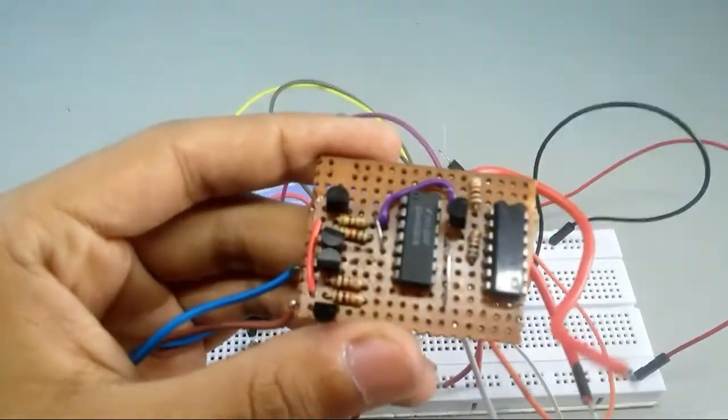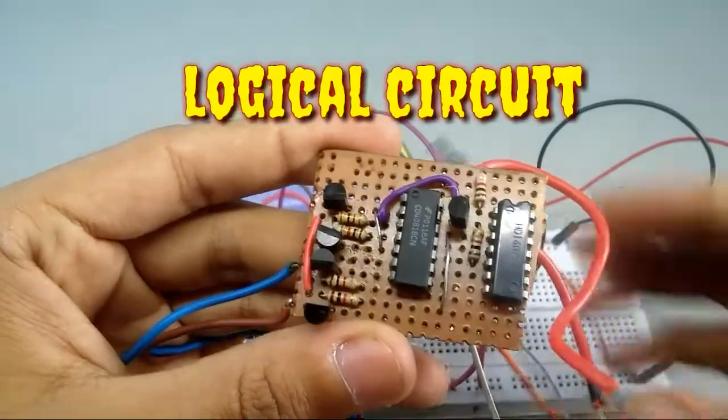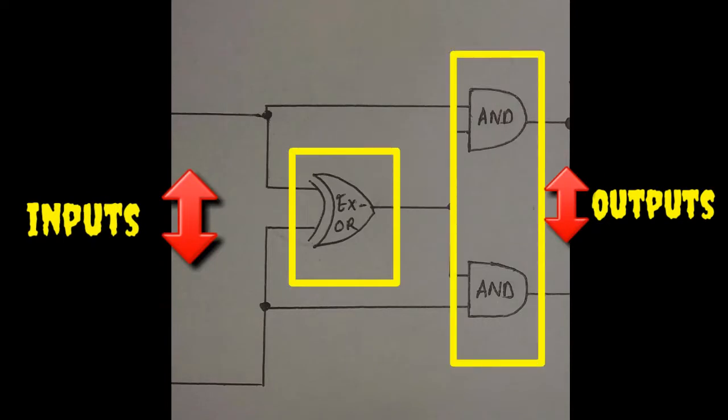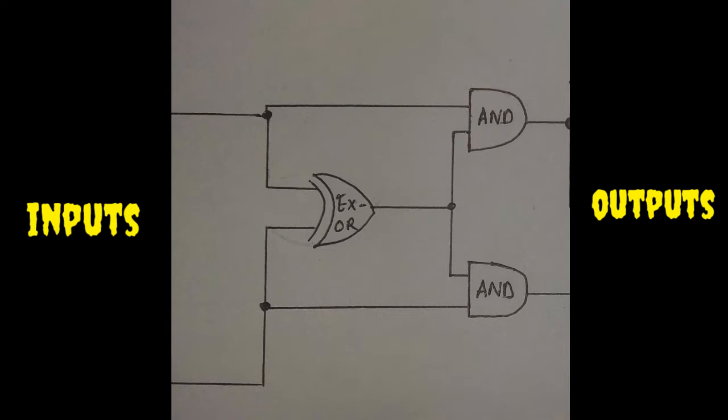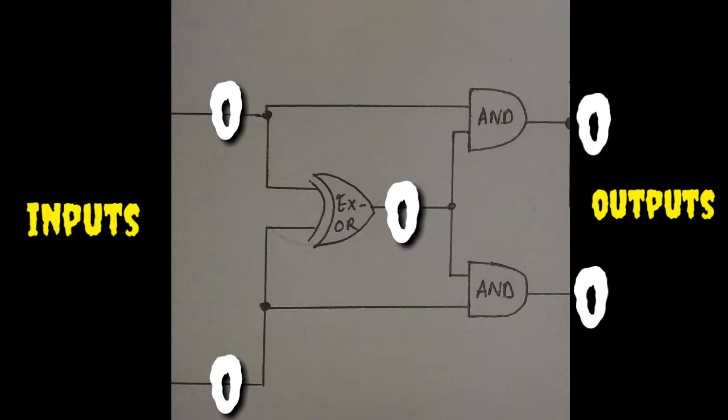Now, this is important. The brain of this circuit is the logic circuit which contains one XOR gate and two AND gates connected in this configuration. When both of the inputs are the same, either both high or both low, the output of XOR is low, and the output of both AND gates are low as well.